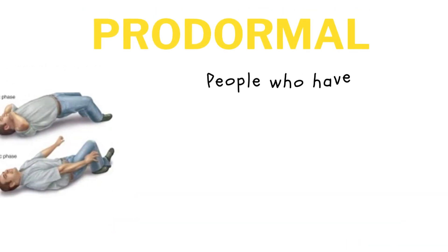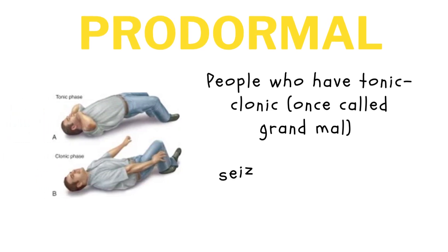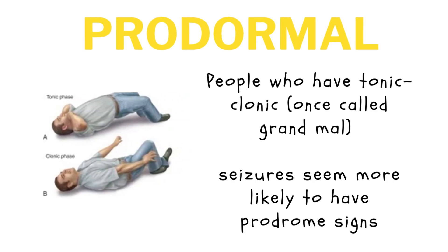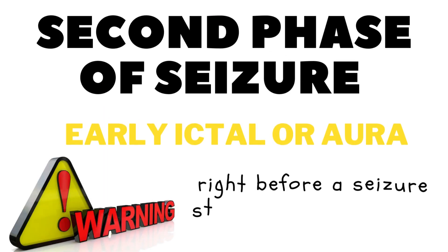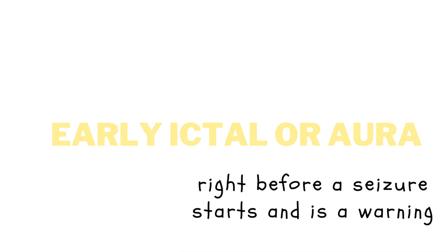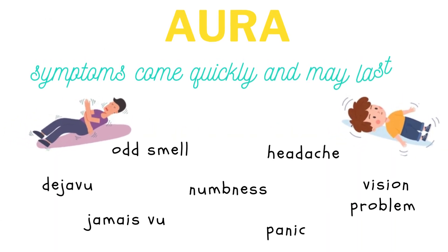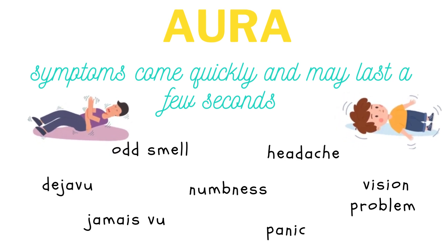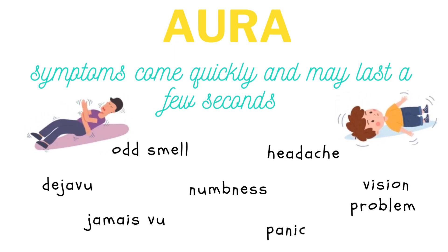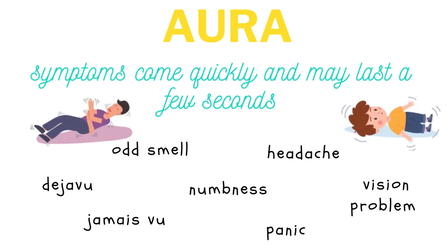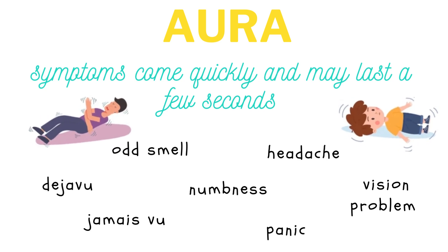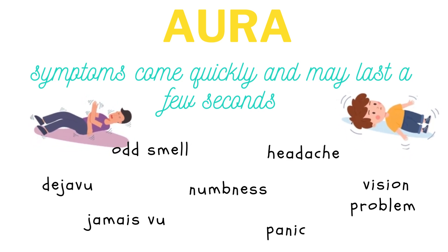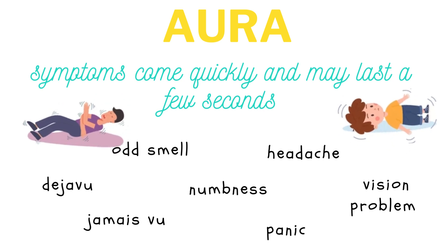People who have tonic-clonic, or grand mal, seizures are more likely to have prodromal signs. These seizures affect both sides of the brain and cause convulsions and loss of consciousness. The next phase, early ictal or aura, happens right before a seizure starts and is a warning that it is about to happen. Symptoms come on quickly and may last only a few seconds. Aura symptoms include déjà vu, jamais vu (a feeling of seeing something as if for the first time), vision problems, odd smells, sounds or tastes, dizziness, numbness or pins and needles, headache, nausea, and sometimes panic or intense fear.